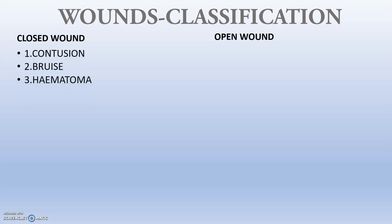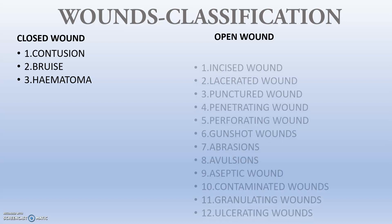Under closed wounds, there are three types: contusion, bruise, and hematoma. We are all familiar with hematoma — we have often seen ear hematoma and tongue hematoma in dogs.